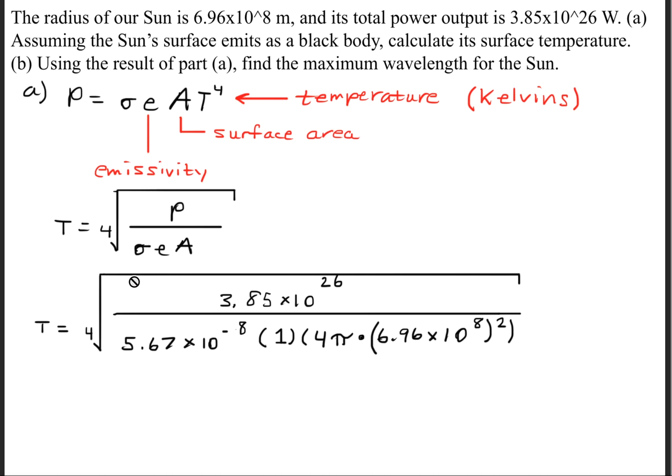Now this sigma, the value for this is 5.67 times 10 to the minus 8th power. The emissivity for a black body is 1. And then like I previously said,